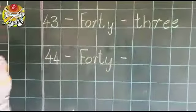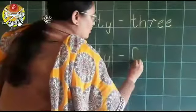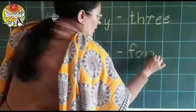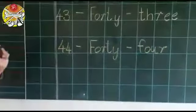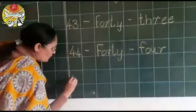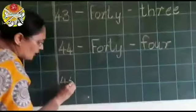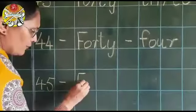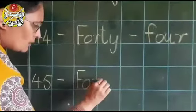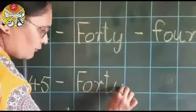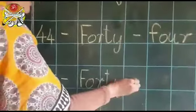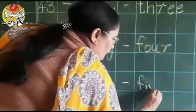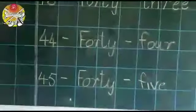Next box, dash. And then, next box, F-O-U-R, 4. 44. Now, the next number name. 45 dash. F-O-R-T-Y, 40 dash F-I-V-E, 5. 45.